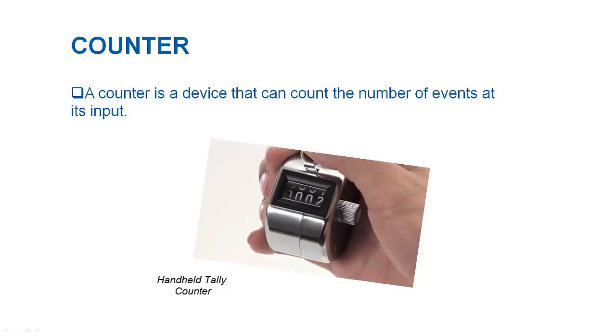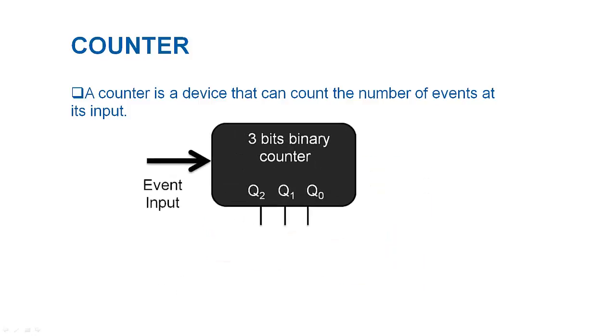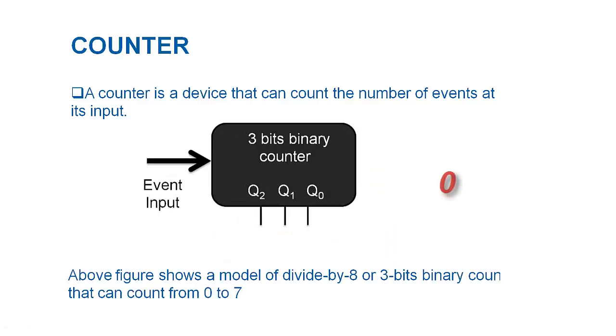A counter is a device that counts the number of events at its input. Let us start with simple 3-bit binary counter. It starts from 0 and when it finds the first event at its input it gets incremented by 1. The second event makes the output binary 010 that is 2 in decimal. The third input event results binary 011 at the output.